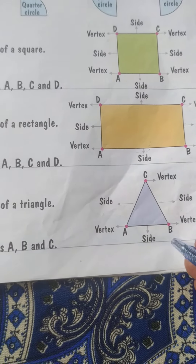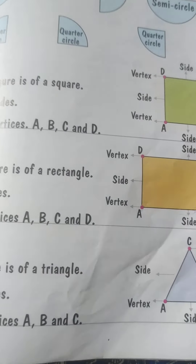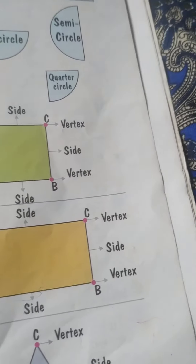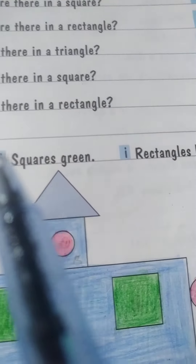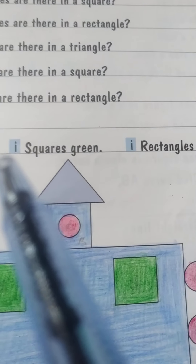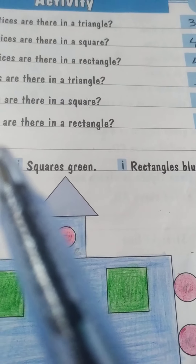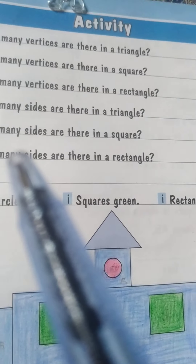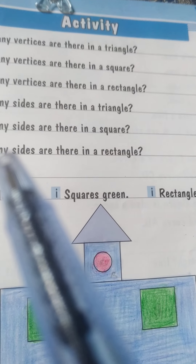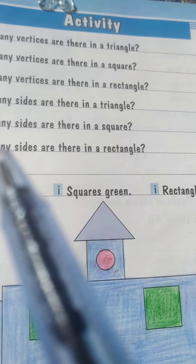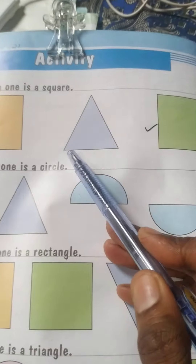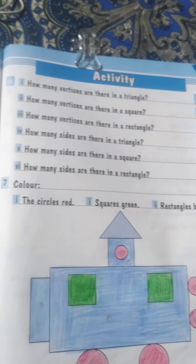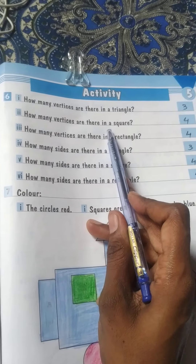These 3 corners are vertices and these are the sides of the triangle. So looking at question number one: how many vertices are there in a triangle? There are 3 vertices in the triangle — corner 1, 2, 3 — so you will write the number 3.